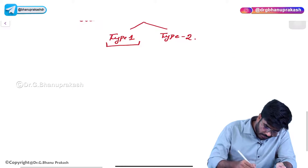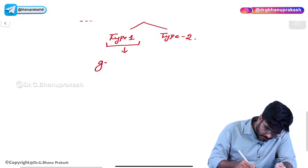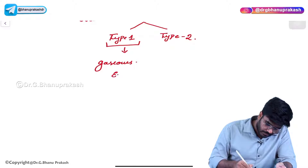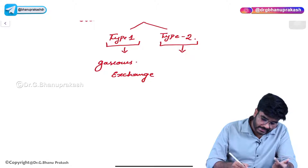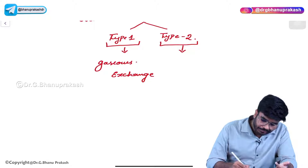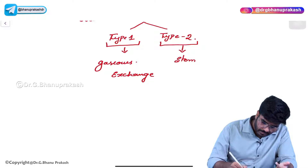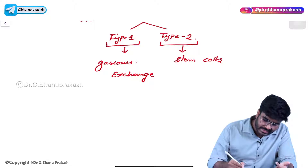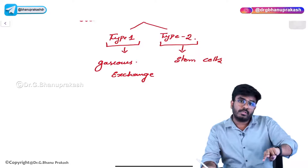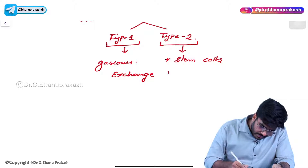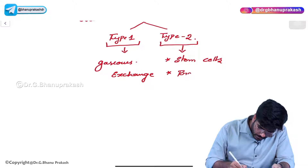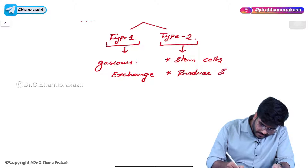Pneumocytes are of two types: Type 1 and Type 2. Type 1 pneumocytes are mainly involved in gaseous exchange. Type 2 pneumocytes are stem cells — whenever there is damage to Type 1 pneumocytes, Type 2 pneumocytes divide and differentiate into Type 1 pneumocytes. Type 2 pneumocytes also produce surfactant.